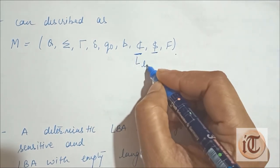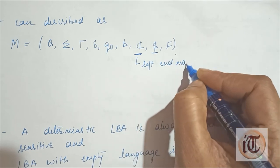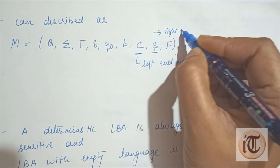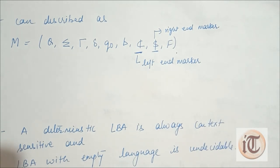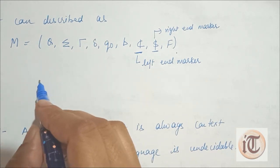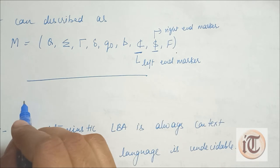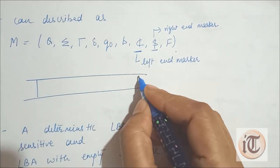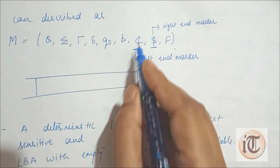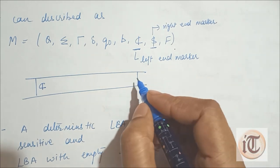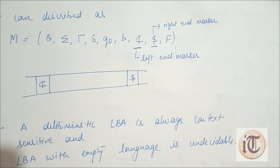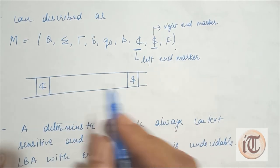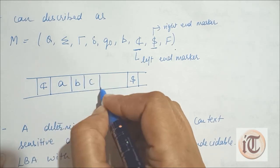This is called the left end marker and this is called the right end marker. In the linear bounded automata, we put a left end marker on the left end side of the tape and a right end marker with the dollar sign on the right hand side of the tape. This restricts the tape to store symbols, and all symbols will come in between these two markers.